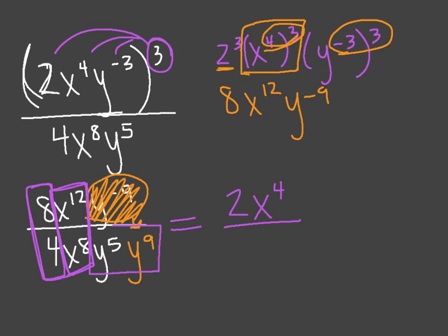And then if I look at my y's, since they're next to each other, I'm going to add them up. So 5 plus 9 is 14. And I'm going to put those on the bottom because both of my y's were already on the bottom.